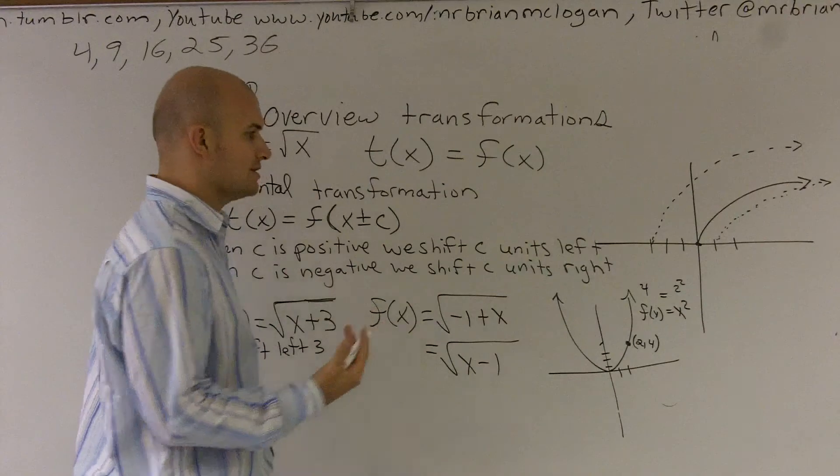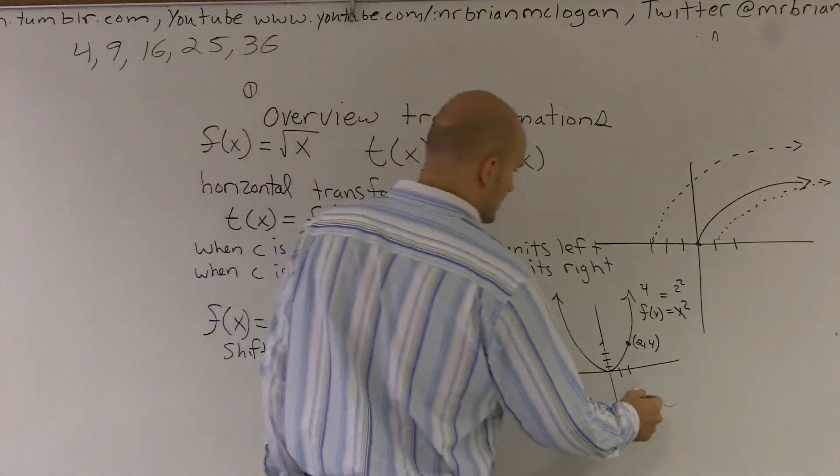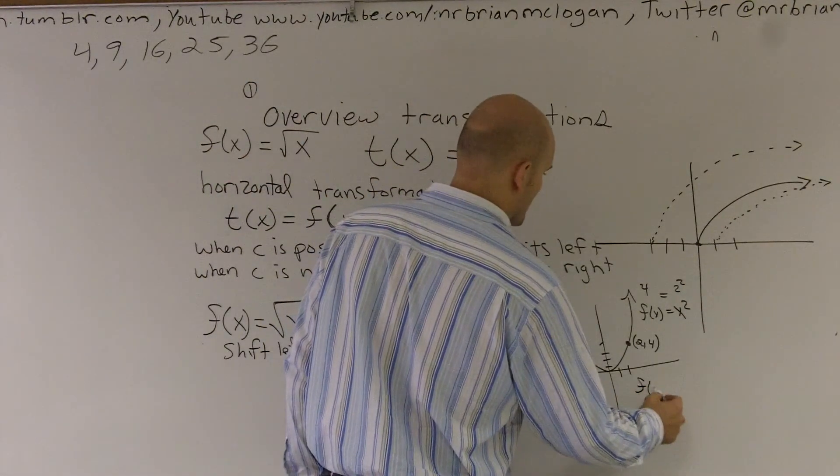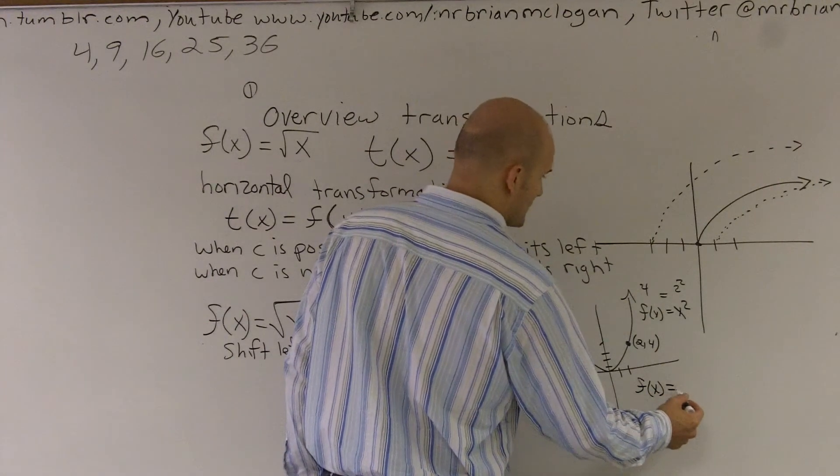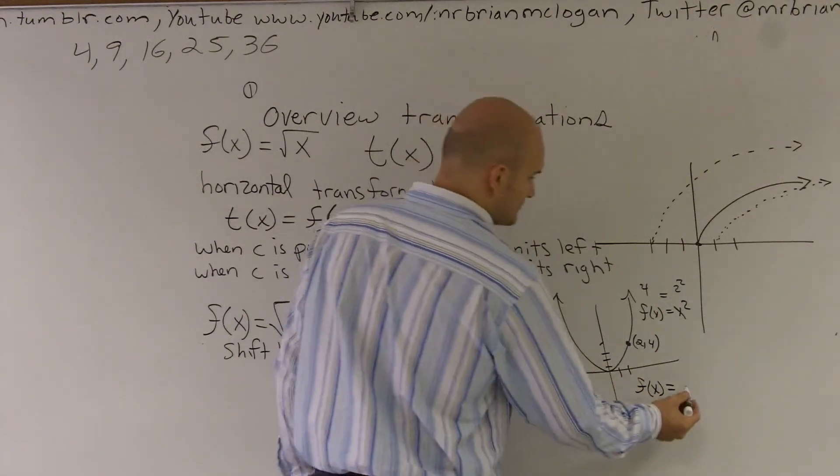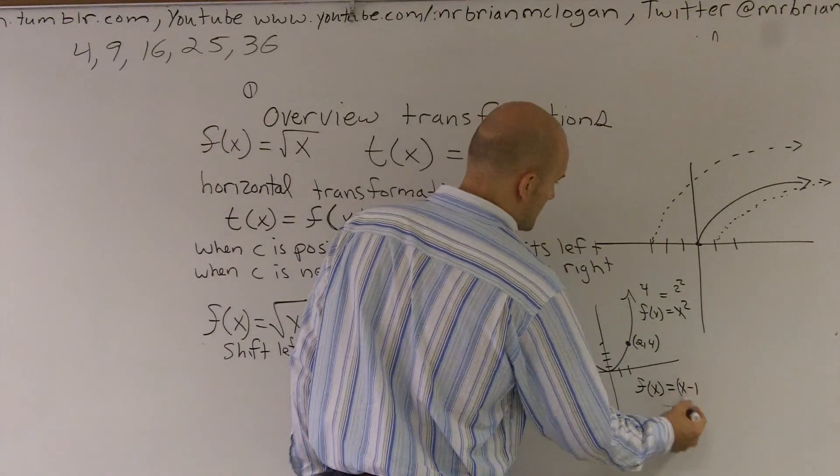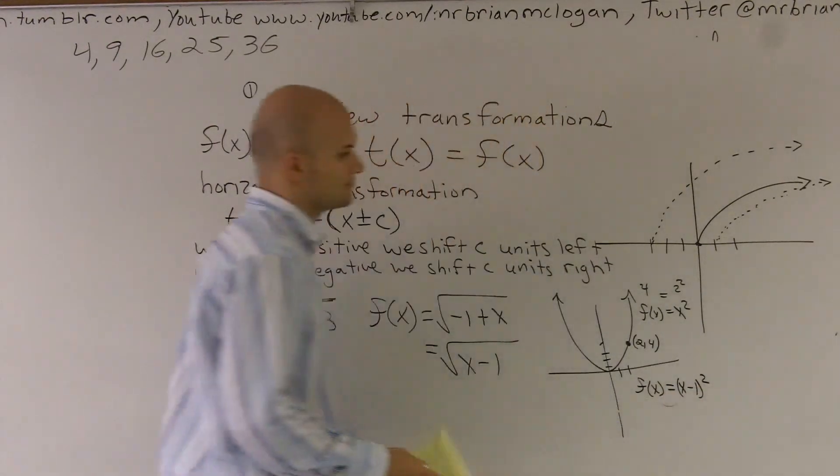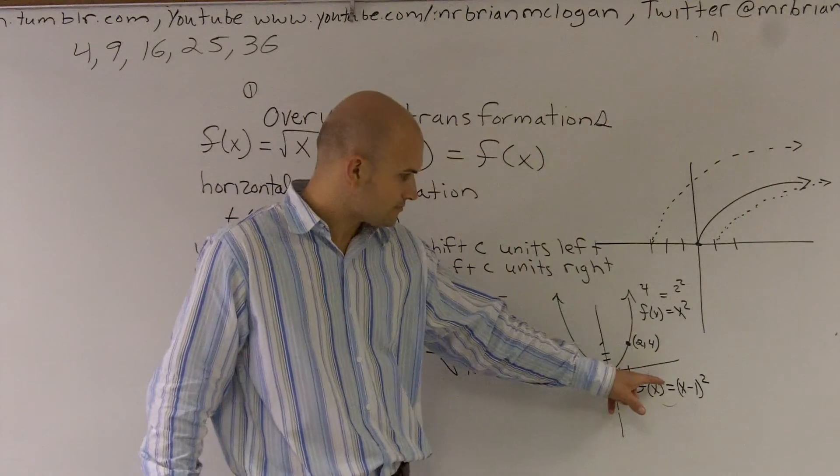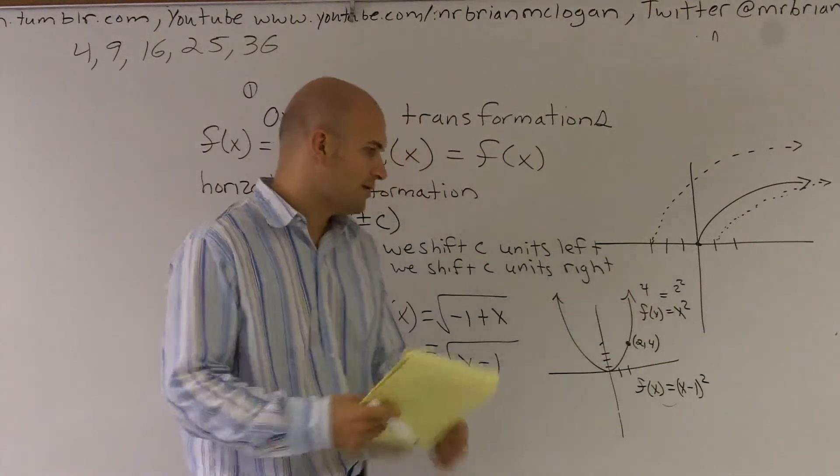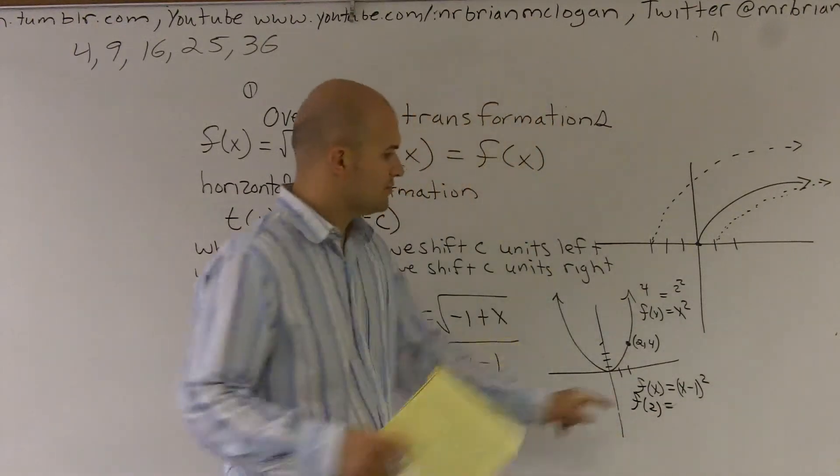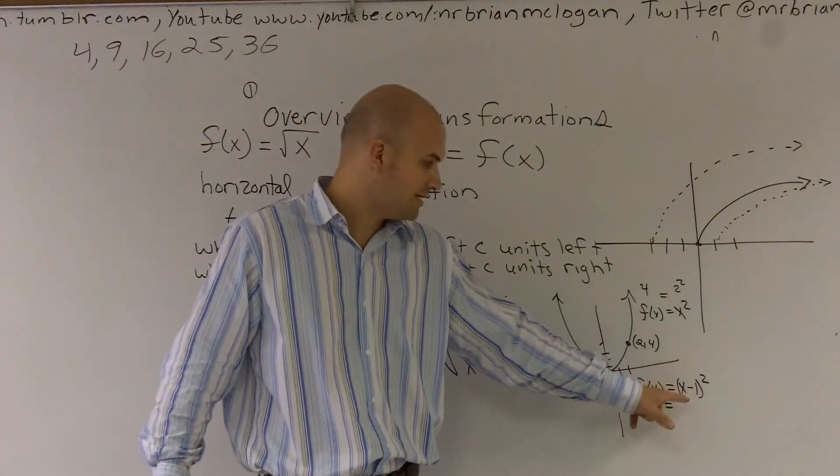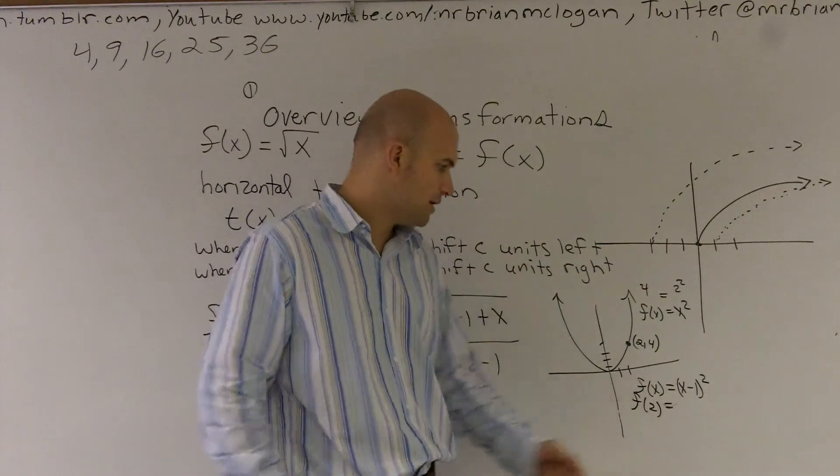So if I was going to do something and I was going to say, how about we get f(x) and let's say we now change it to x minus 1. Therefore, if I was going to now plug in my point and I wanted to find out what is f of 2, well, you plug in 2. 2 minus 1 is 1, 1 squared is 1. So I'd go over 2 and now my new point would be right there.